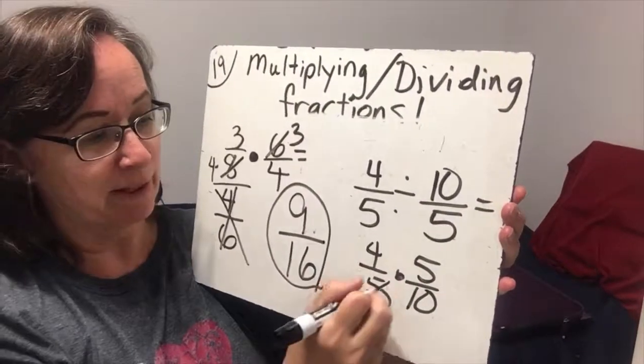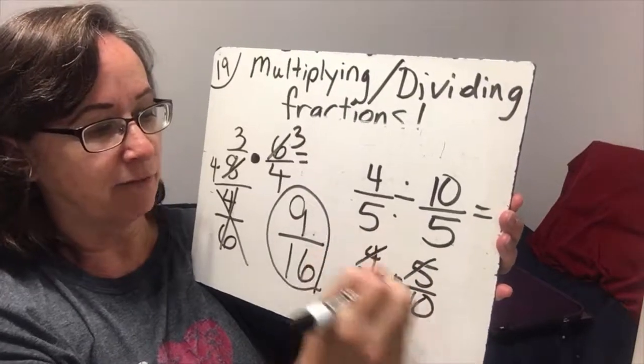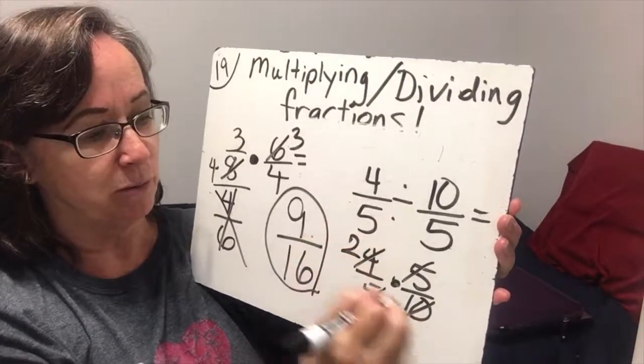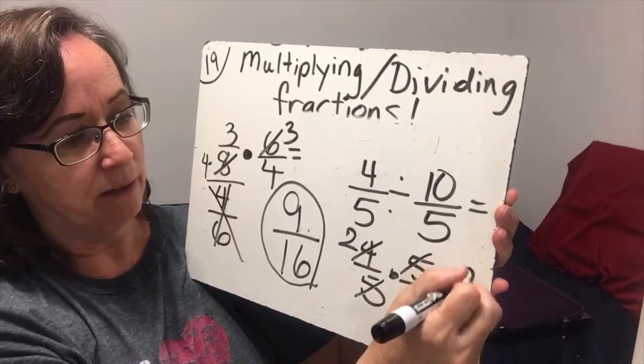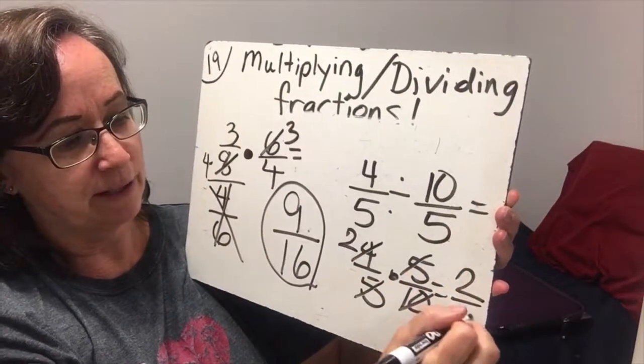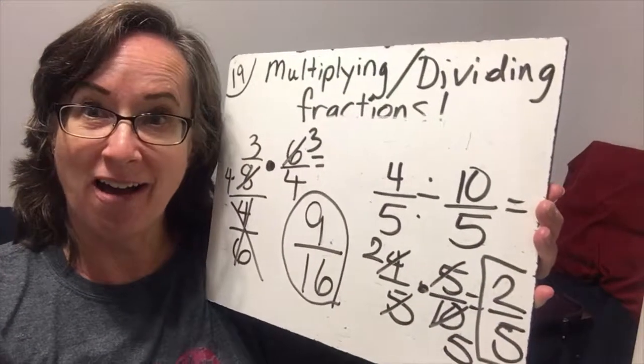Oh, that's a nice one because our fives cancel and we're left with 4 over 10. But our 4 and our 10 both have twos that we can take out and we wind up getting 2 fifths. And that is all we had.